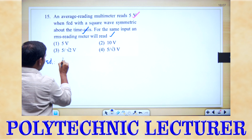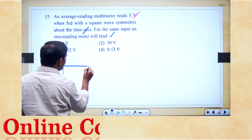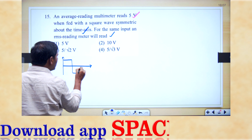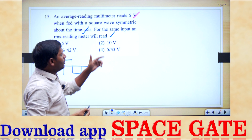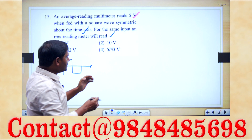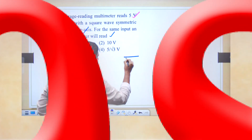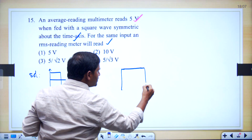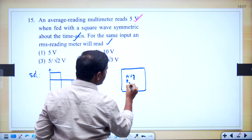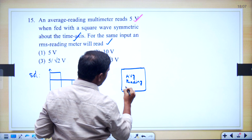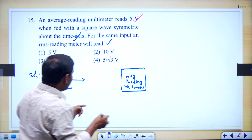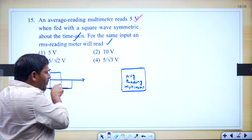Given that a symmetrical square wave — we know that for a symmetrical square waveform its average value is 0 if you calculate directly. But in the problem it is given that the average is 5 volts. The average reading multimeter measuring 5 volts means this waveform is not applied directly.